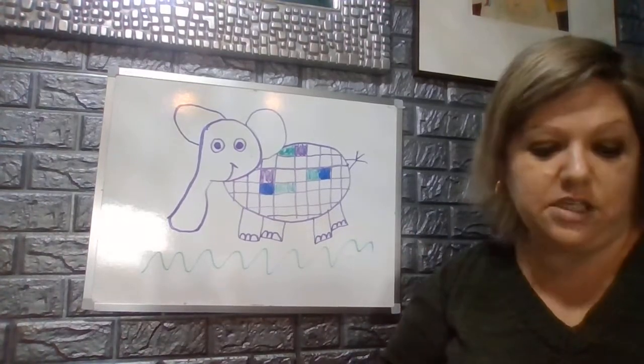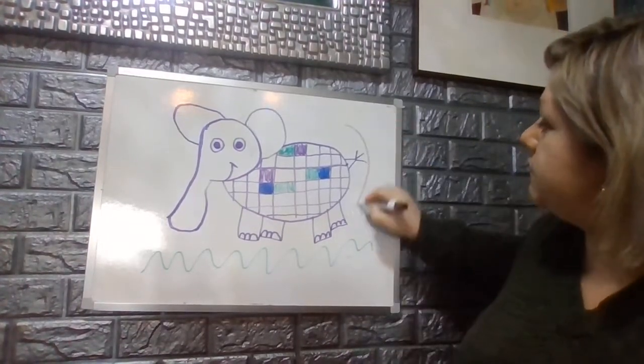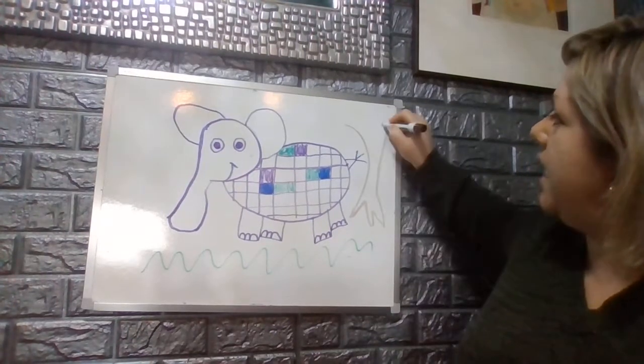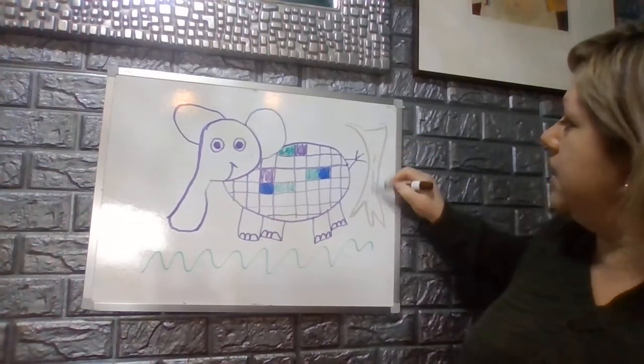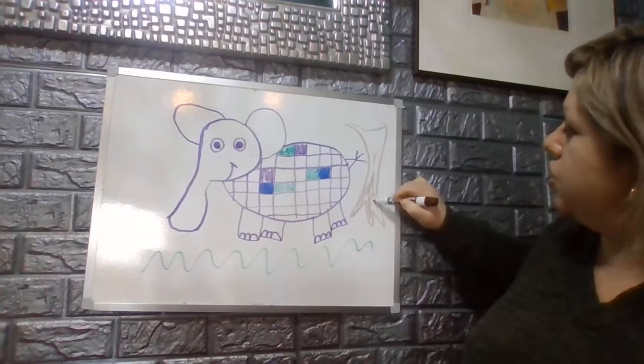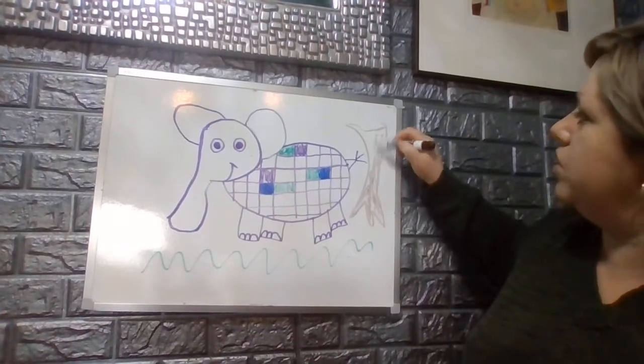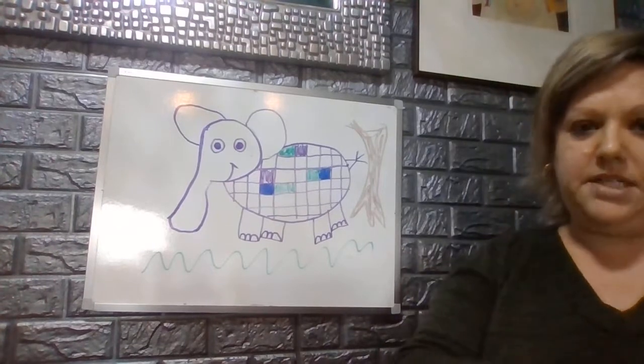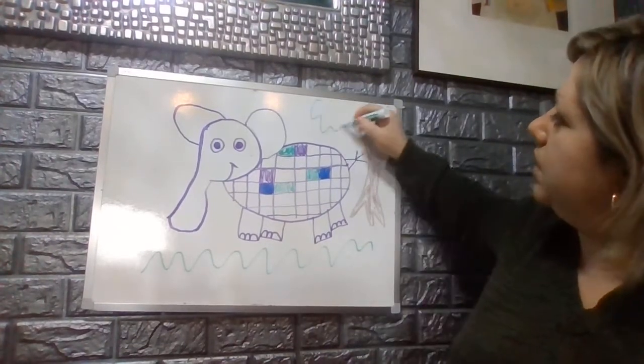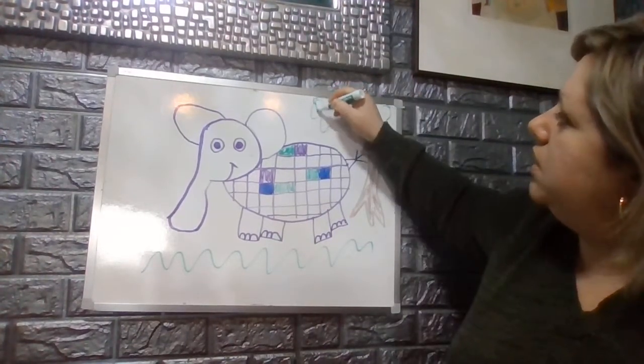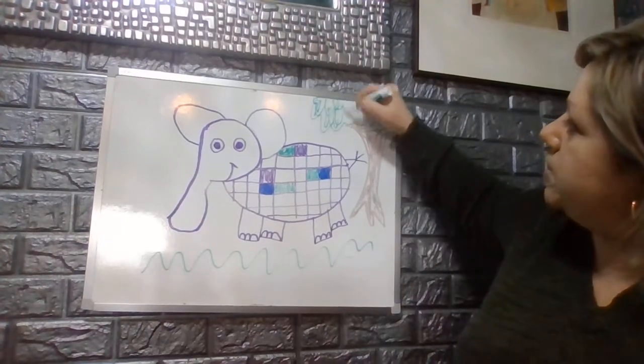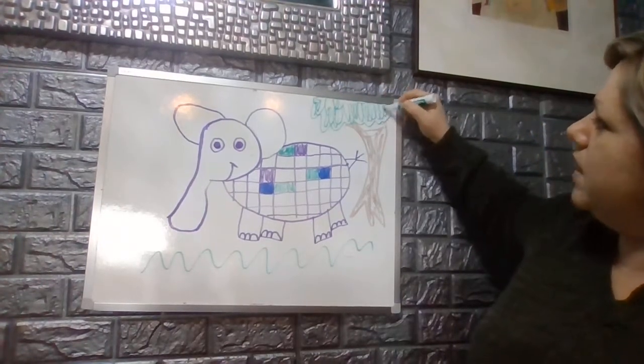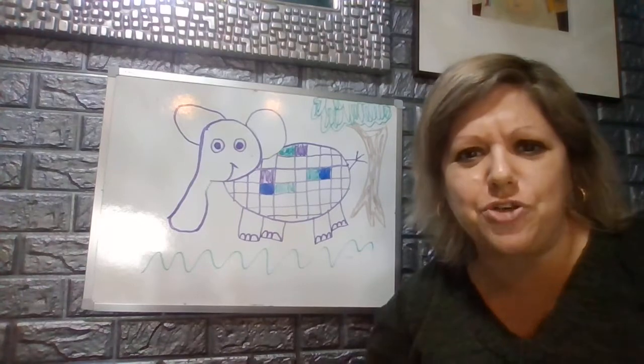So we can do some zigzag lines on the bottom in green for the grass. We can add a tree on the side over here and color that in to show that he is in the jungle or the rainforest and in his own habitat. So here we go. And I'm going to use an organic cloud to make the top of the tree. Be as creative as you want.